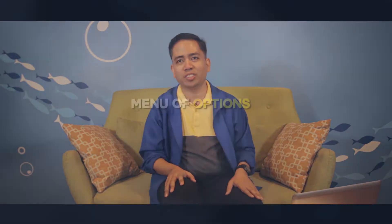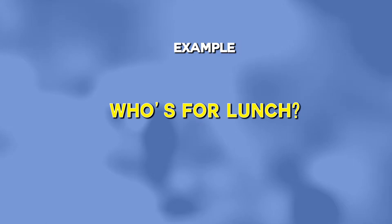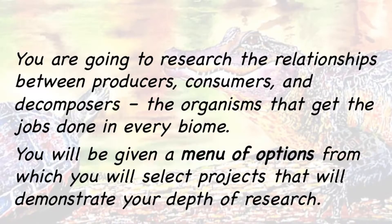One such way is using the menu of options. Here is an example of a task that will be performed by students called 'Who's for Lunch?' — a lesson in science on the relationships among organisms, predators, species, etc. The students are given this instruction: you are going to research the relationships between producers, consumers, and decomposers — the organisms that get the jobs done in every bio.